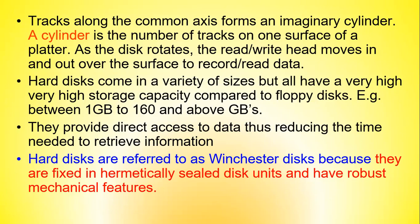The tracks along the common axis form an imaginary cylinder. A cylinder is the number of tracks on one surface of a platter. As the disk rotates, the read-write head moves in and out over the surface to record and read data. Hard disks come in a variety of sizes but have very high storage capacity compared to other storage media like floppy diskettes, and these capacities can range from 1 GB and above. They provide direct access to data, reducing the time needed to retrieve information.